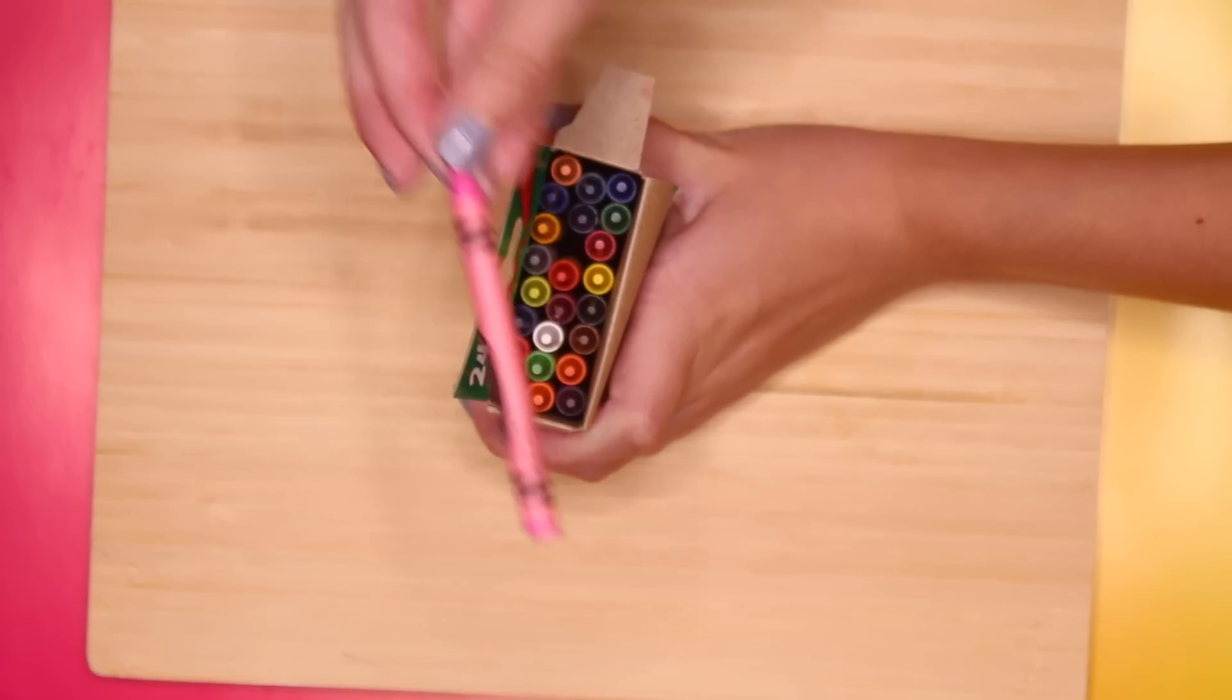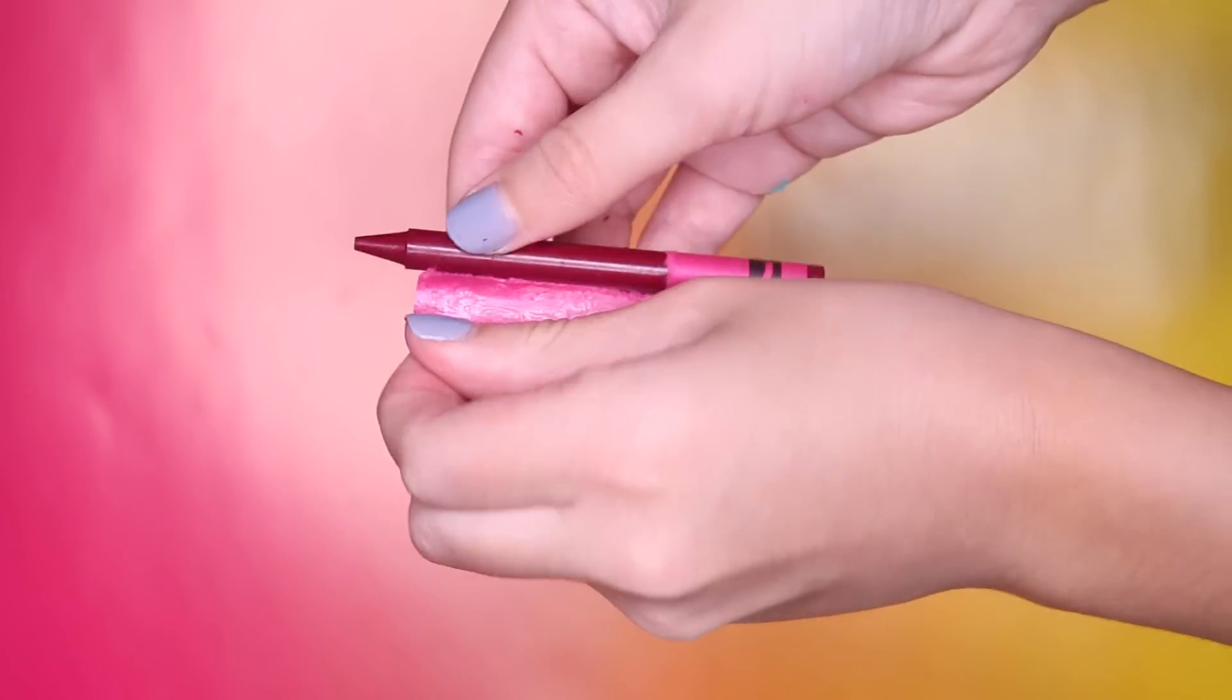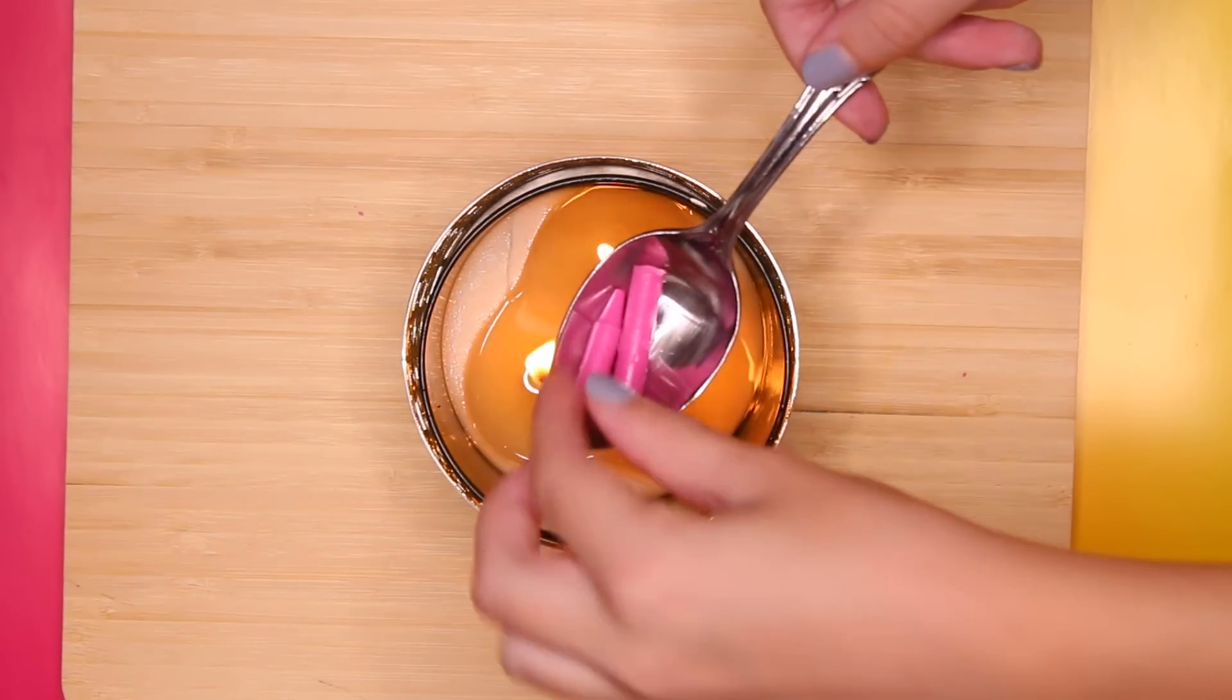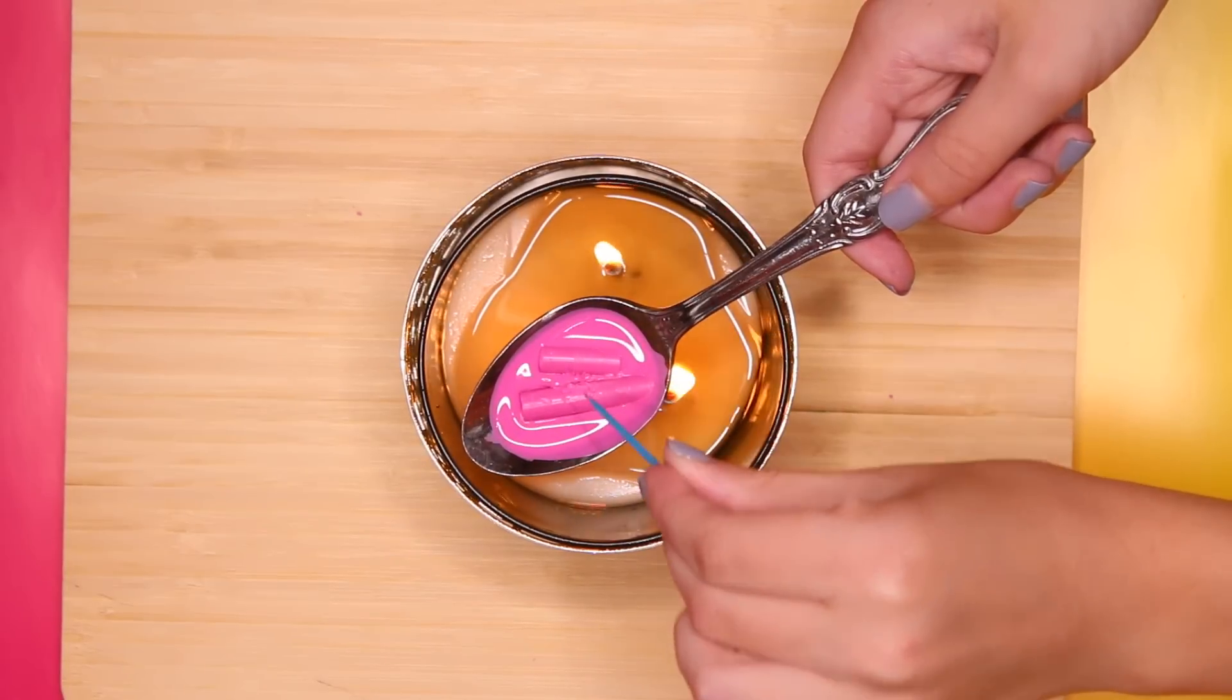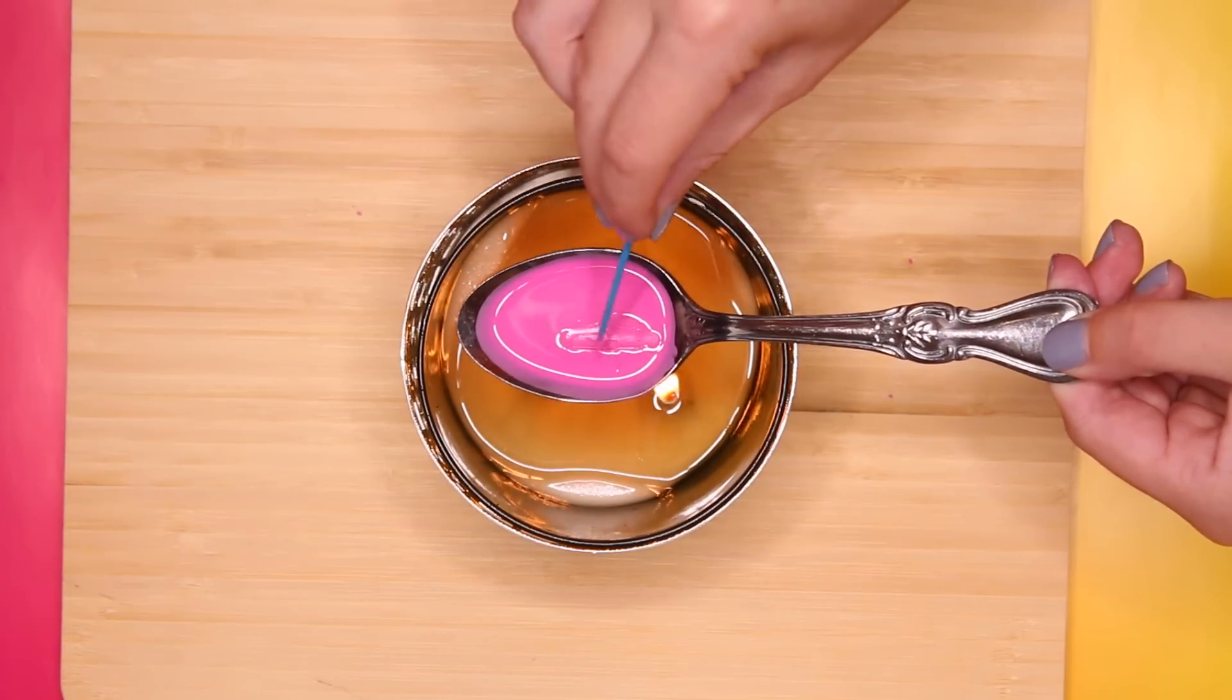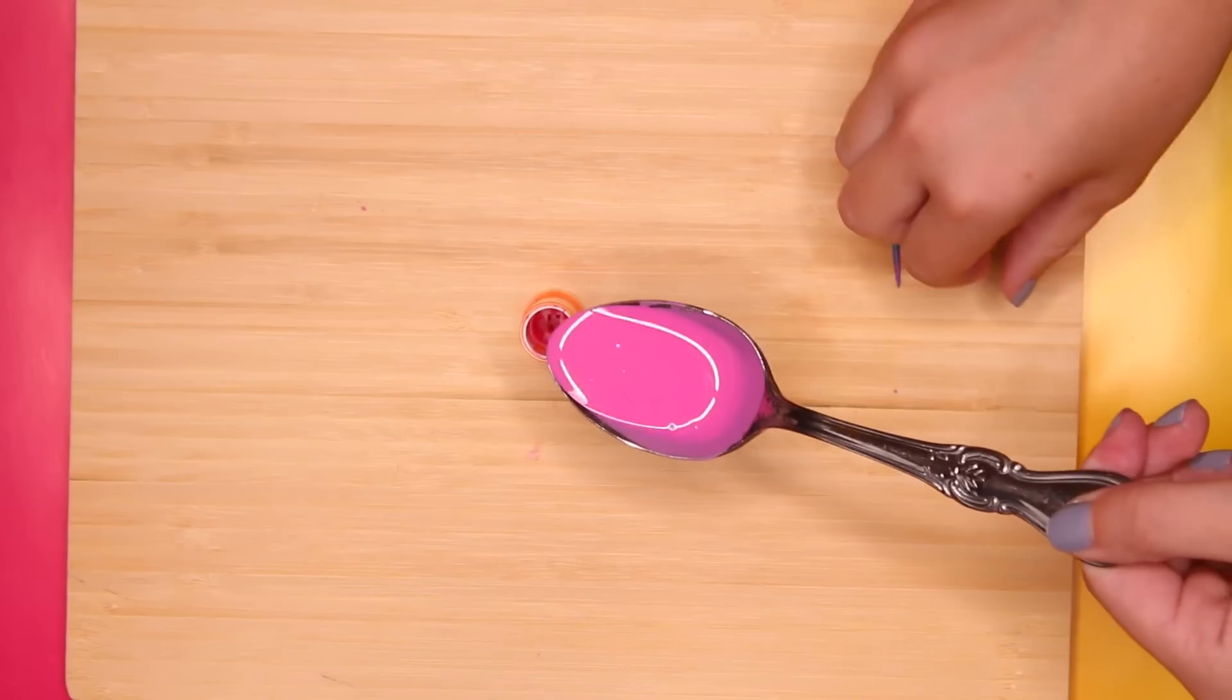Next you're obviously going to want to take off the paper covering on the crayon and a really easy way to do this is to take an exacto knife and just carefully cut down the side of the crayon. And then the wrapper will come off really easily. And now you're going to want to melt the crayons. All I did was break my crayon up into a few pieces, put it in a spoon and hold it over a candle. And it actually melted fairly quickly and it was really easy.